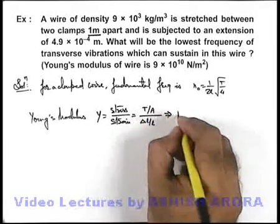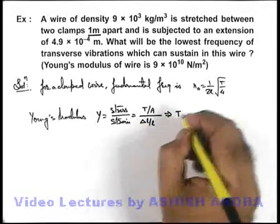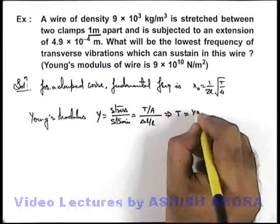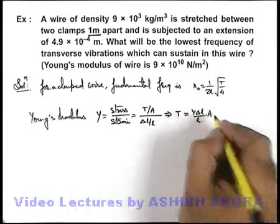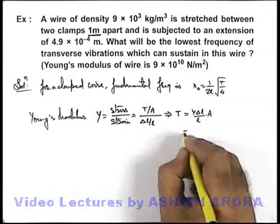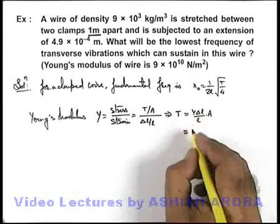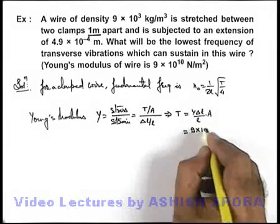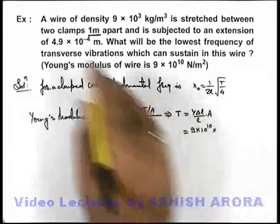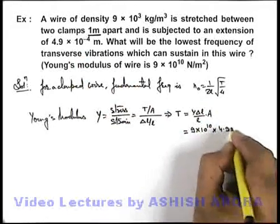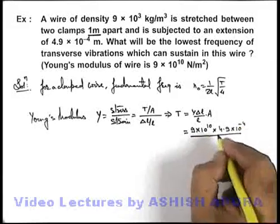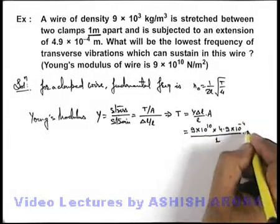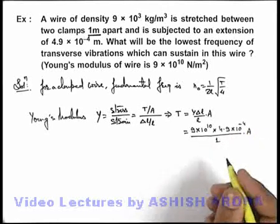So from here we can get the value of tension. It can be given as Y times ΔL/L times the cross sectional area. The value of Y is 9 × 10¹⁰ multiplied by extension 4.9 × 10⁻⁴ divided by length of the string, 1 meter, and the area of cross section which we wish to calculate.